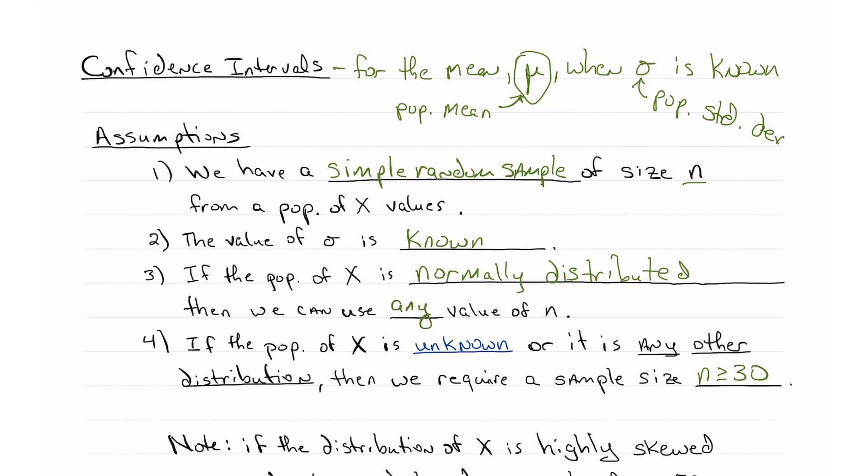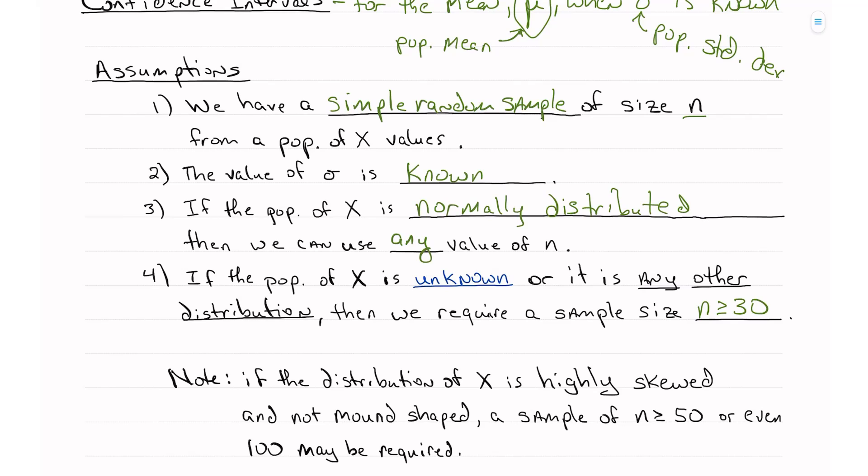So if it doesn't say what type of distribution, or if we have some other distribution, we could say it's uniform, exponential, or anything, we have to have at least 30 for our sample size. So in this course, we're going to use 30 as our minimum. Now in actual practice, if you have a highly skewed distribution and it's not mound-shaped, then we might need a sample size of at least 50 or even 100. But for this course, as long as we have 30 or greater, we're going to use these formulas.